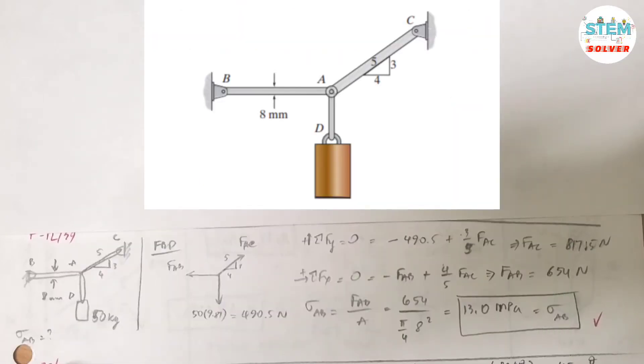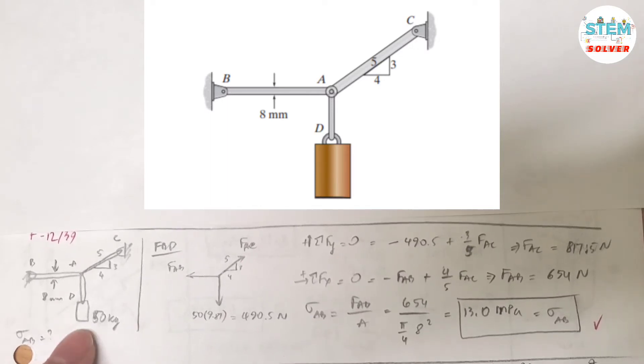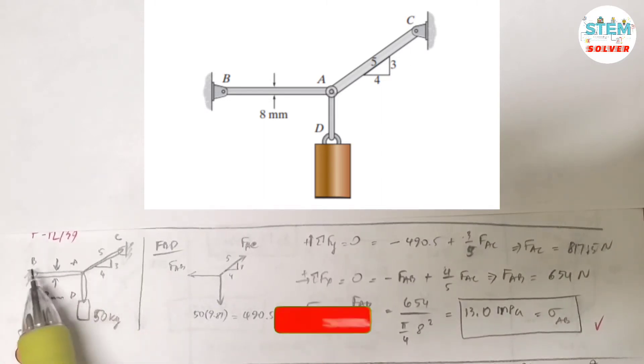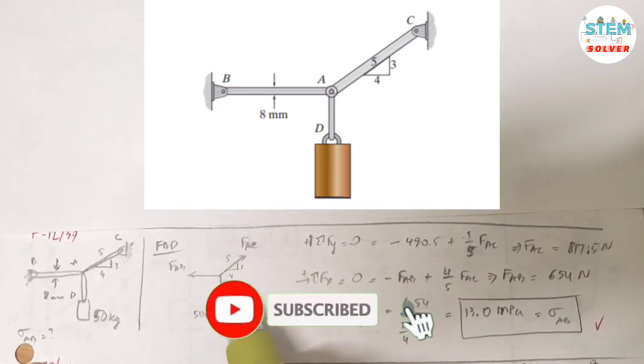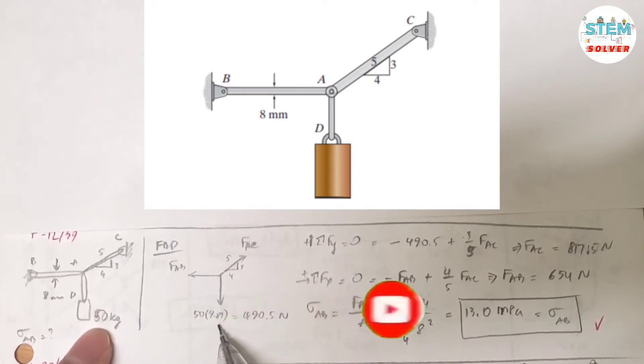Here is the figure for rod AD, AB and AC. You're asked to find the normal stress in rod AB, which is this rod. Here is my free body diagram for it. You're given the mass, so the weight is 490.45 N, calculated by multiplying the mass by gravity.